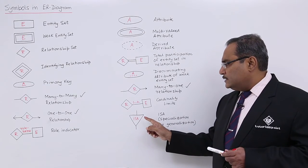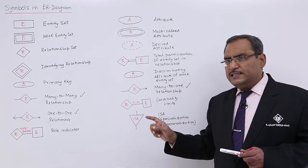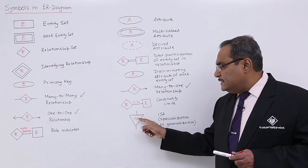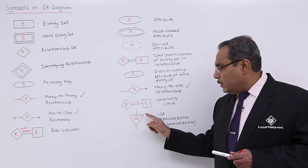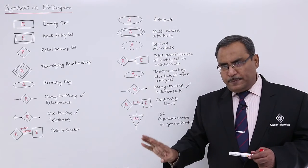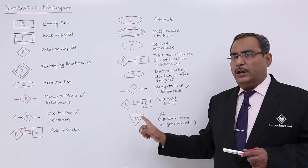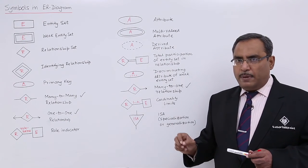This is a case where we will be going for generalization and specialization, and it will be denoted by IS-A. There will be a triangle within which IS-A will be written. We shall have a separate video on this particular topic for better understanding.